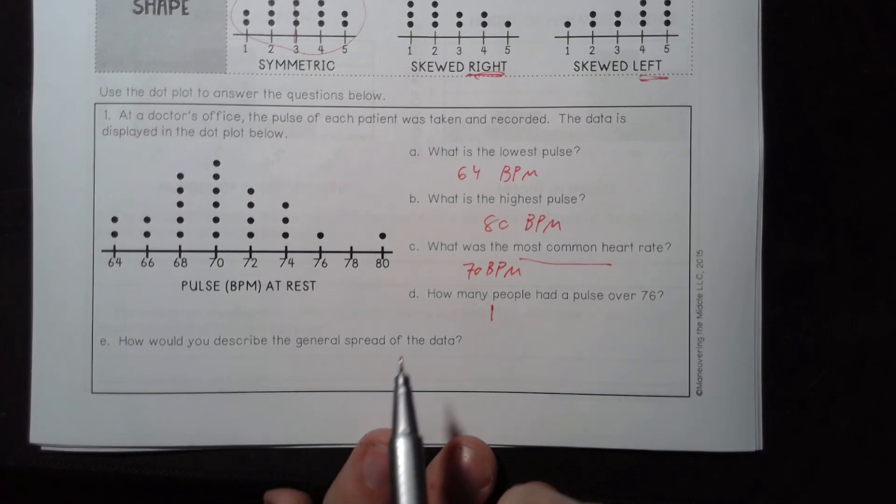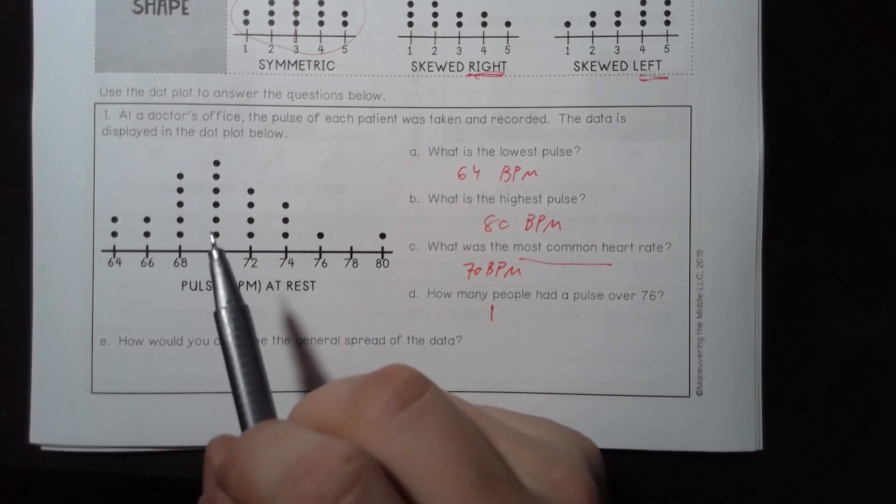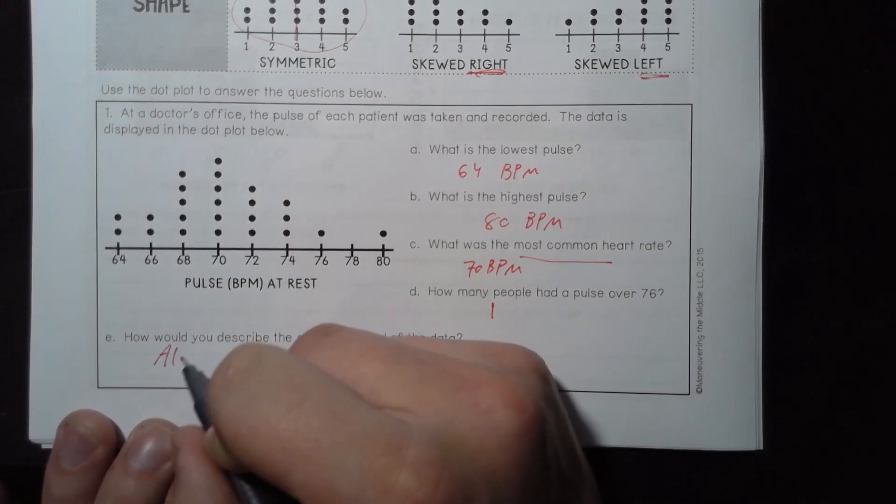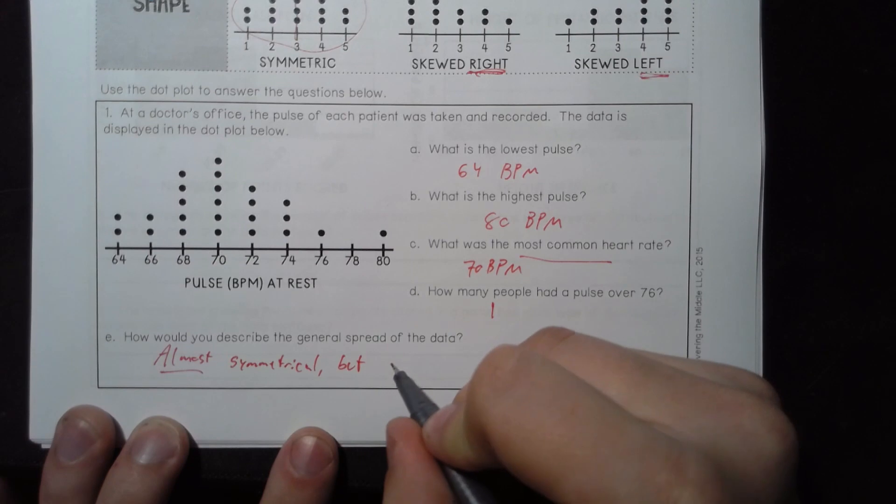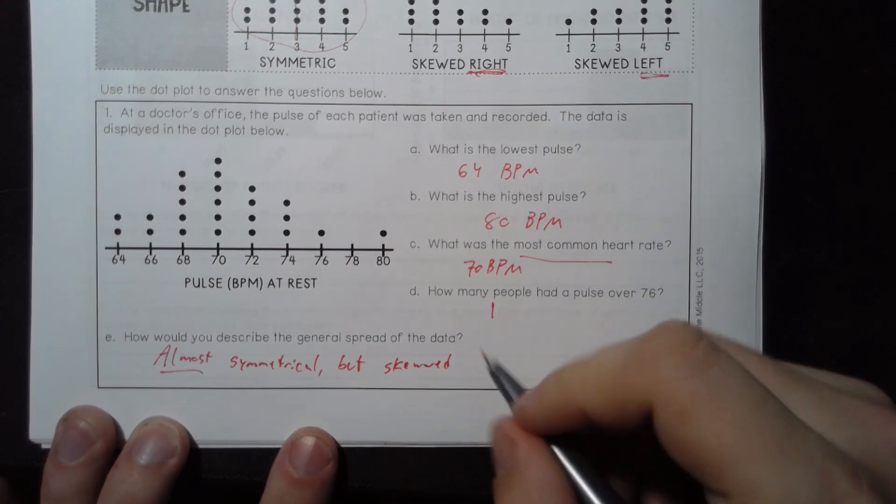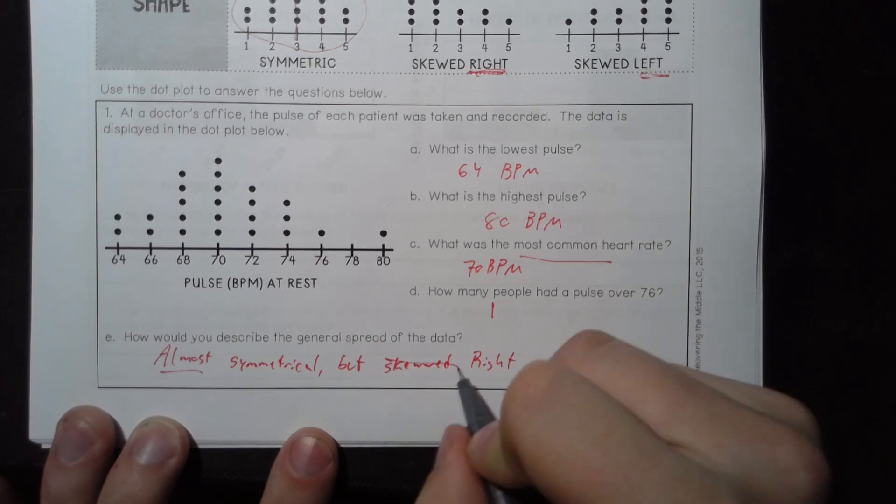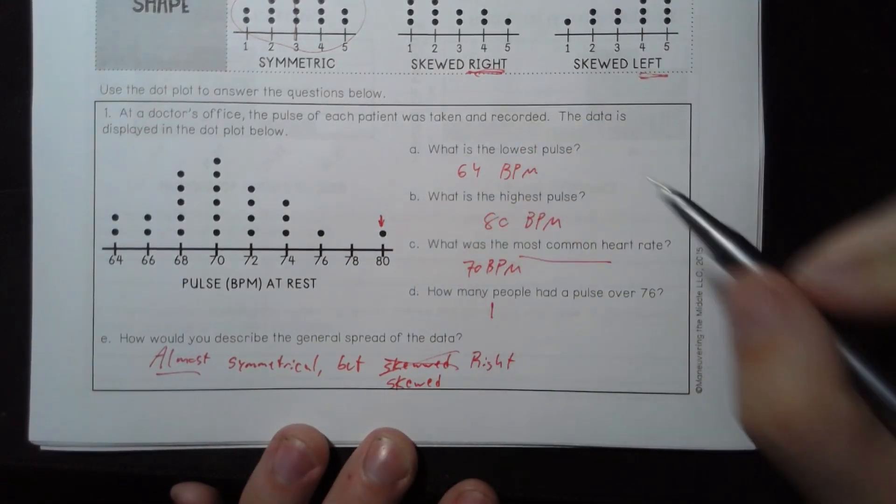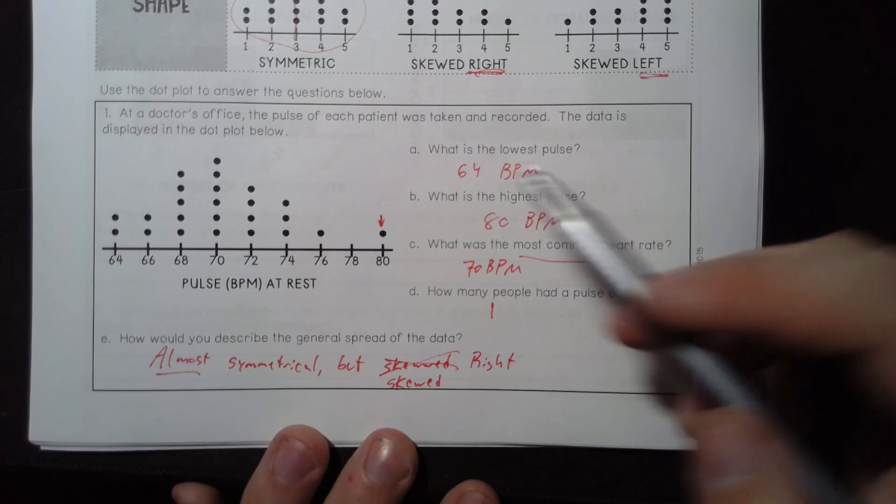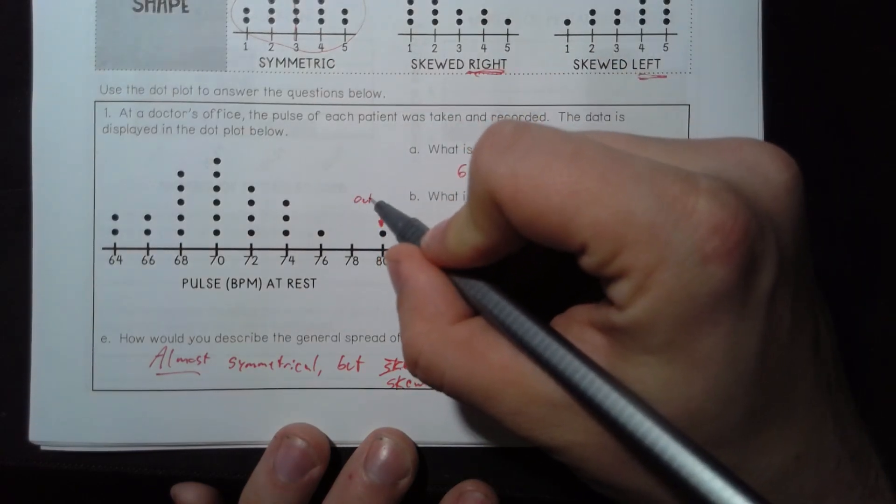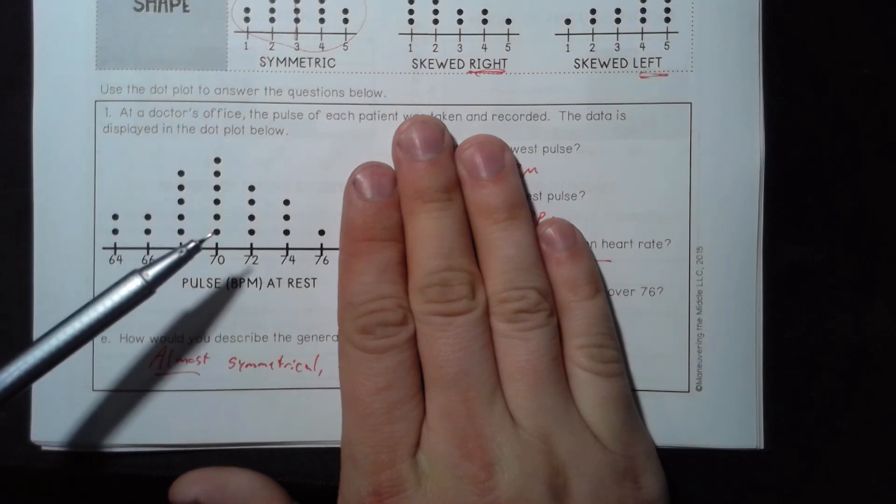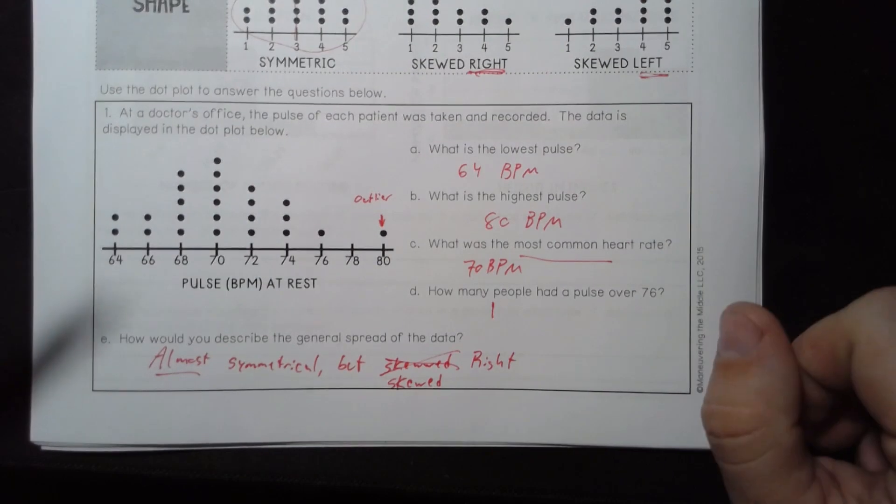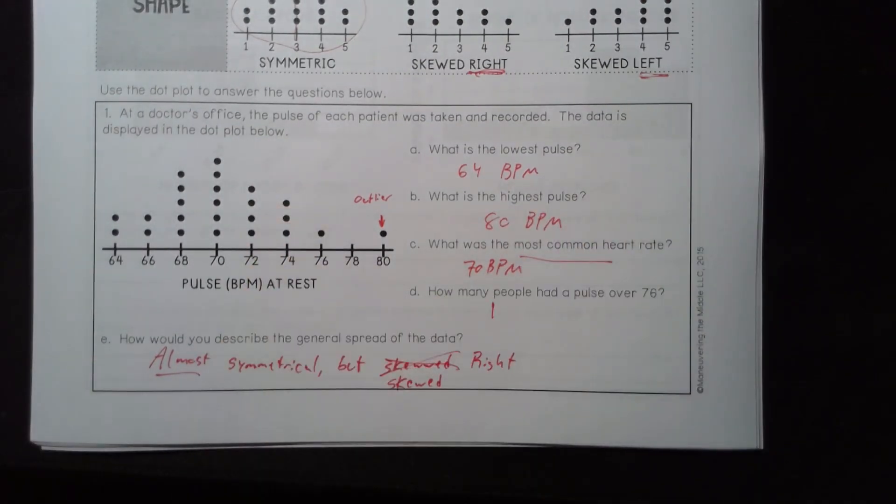How would you describe the general spread of the data? I would say it's almost symmetrical. So, almost symmetrical. But, it's skewed to the right. It's going to be skewed to the right, because I have this one guy over here, whose heart rate was much higher than the rest. So, this is what we would call an outlier. Without this piece of data, our data almost looks perfectly symmetrical. It's maybe a tiny bit skewed one way or the other. But, it's mostly symmetrical. Then, you throw that guy in, and the data's ruined. That's what we would call an outlier.